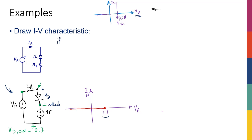Let's approach the problem by assuming D1 is on, meaning it has some current. If the diode is on, I know it can be replaced with a simple voltage source with value Vd_on — which could be 0.7, 0.8, whatever is given to us.